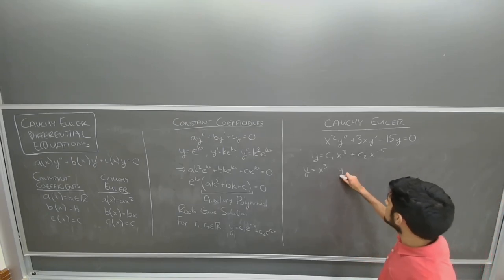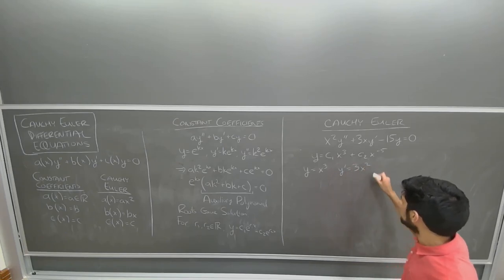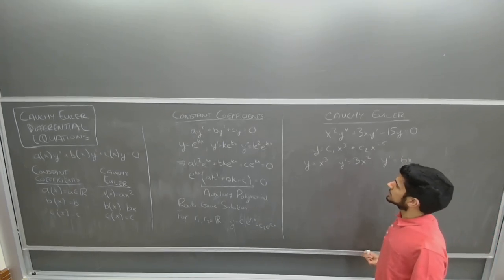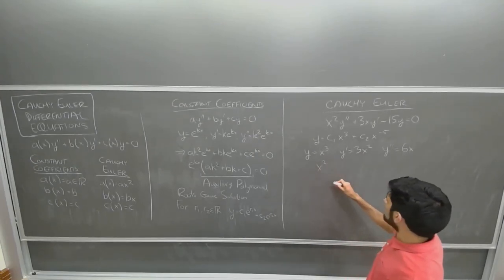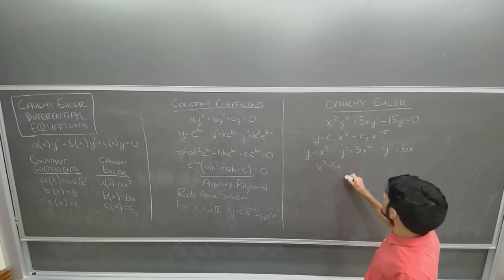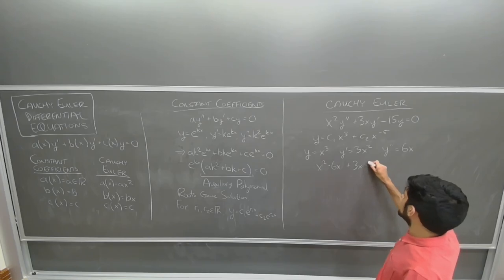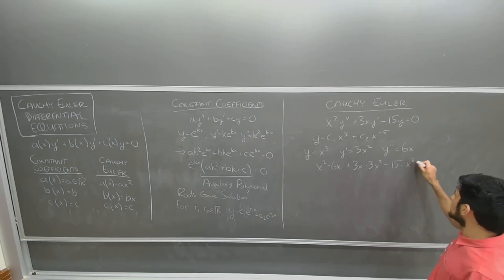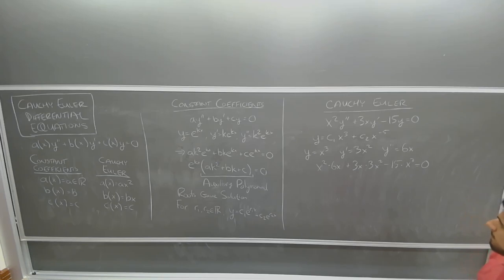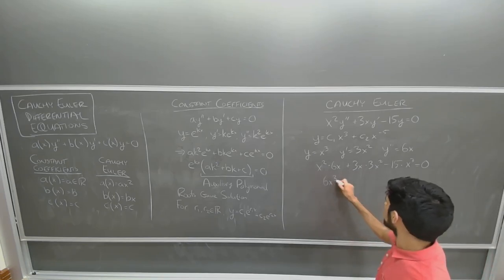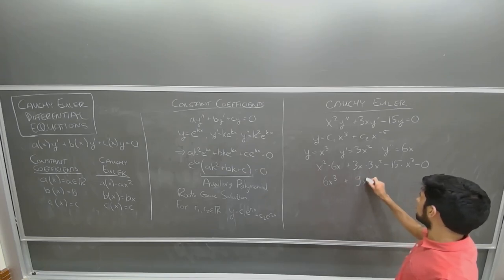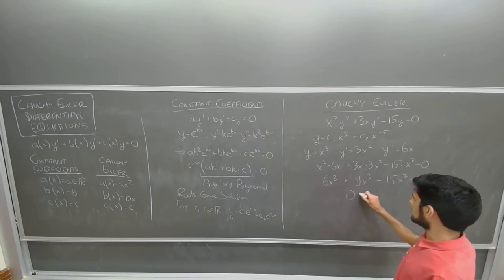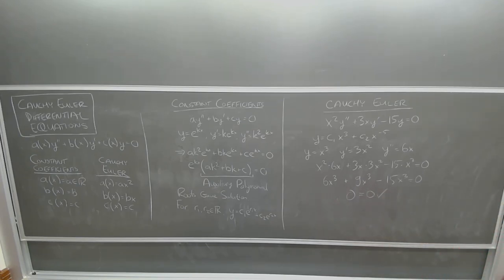To check y = x³, we compute y prime = 3x² and y double prime = 6x. Substituting in: x² times 6x, plus 3x times 3x², minus 15 times x³. This gives 6x³ plus 9x³ minus 15x³, which equals 0. So x³ is indeed a solution.